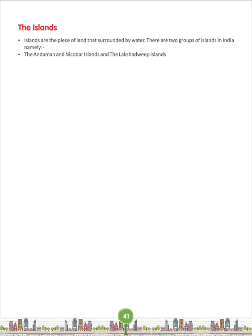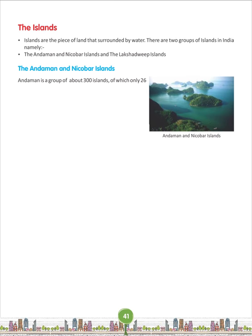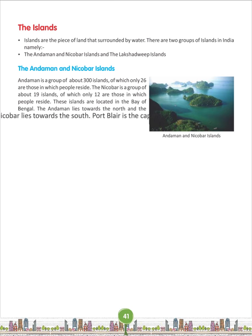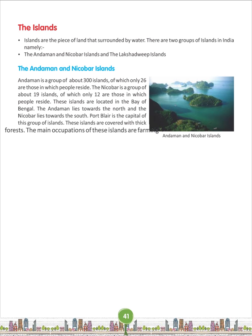Islands are pieces of land surrounded by water. There are two groups of islands in India: the Andaman and Nicobar Islands and the Lakshadweep Islands. Andaman is a group of about 300 islands of which only 26 are inhabited. Nicobar is a group of about 19 islands of which only 12 are inhabited. These islands are located in the Bay of Bengal. The Andaman lies towards the north and the Nicobar lies towards the south. Port Blair is the capital of this group of islands. These islands are covered with thick forests.